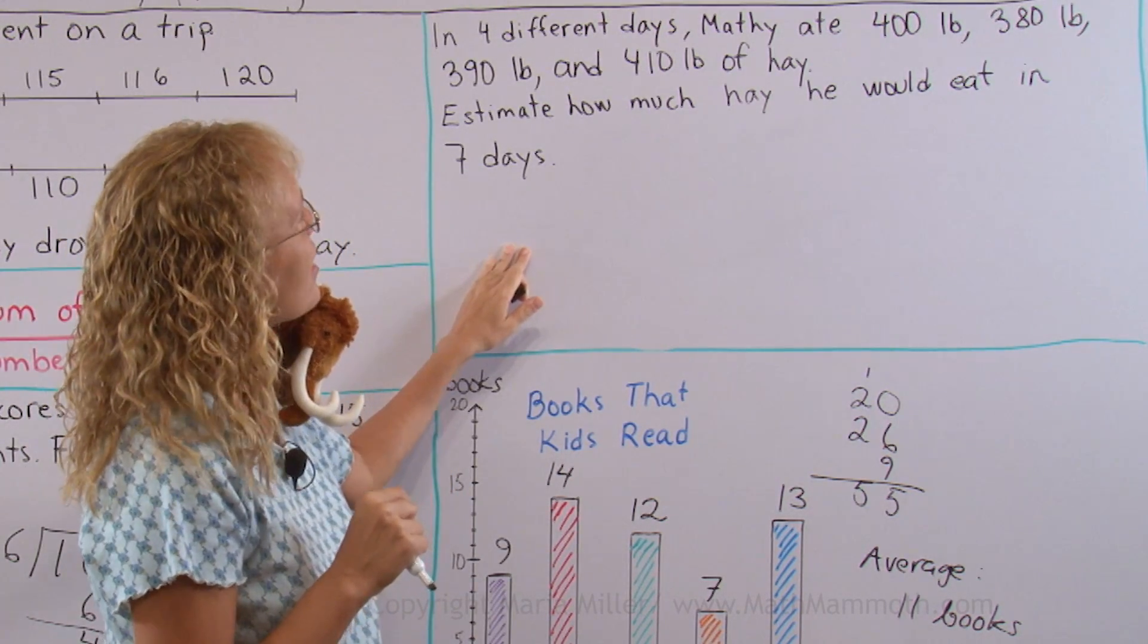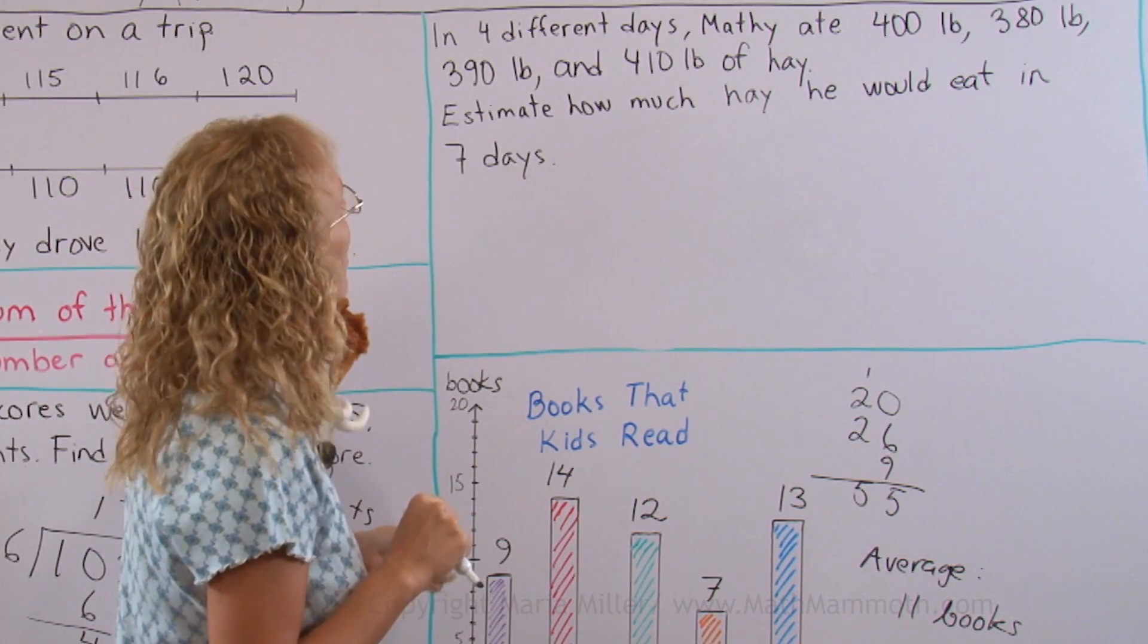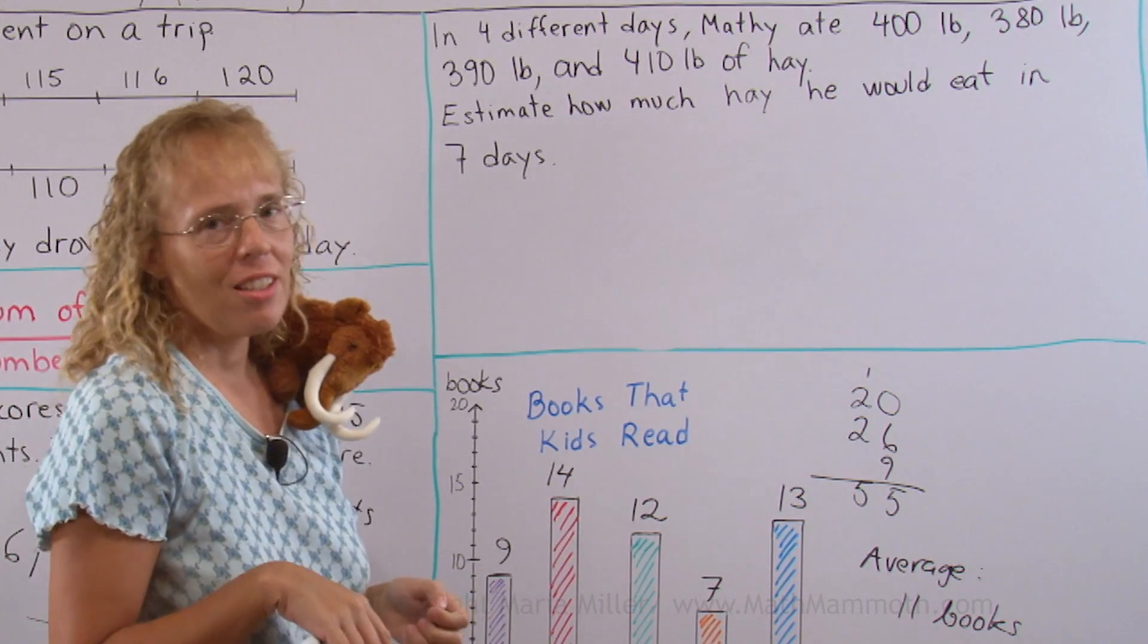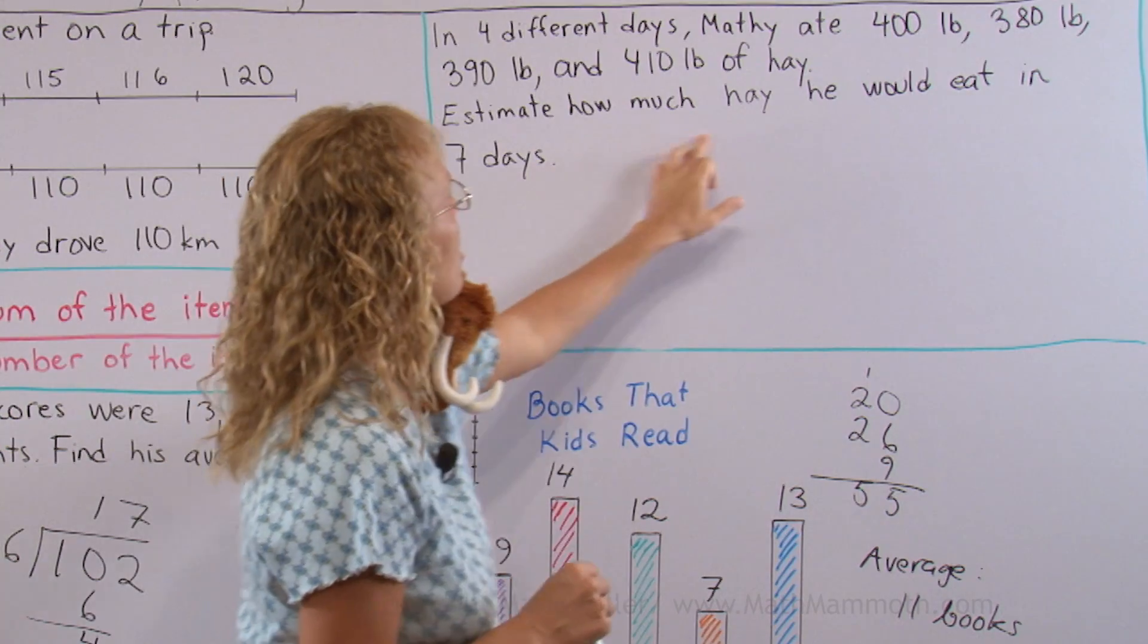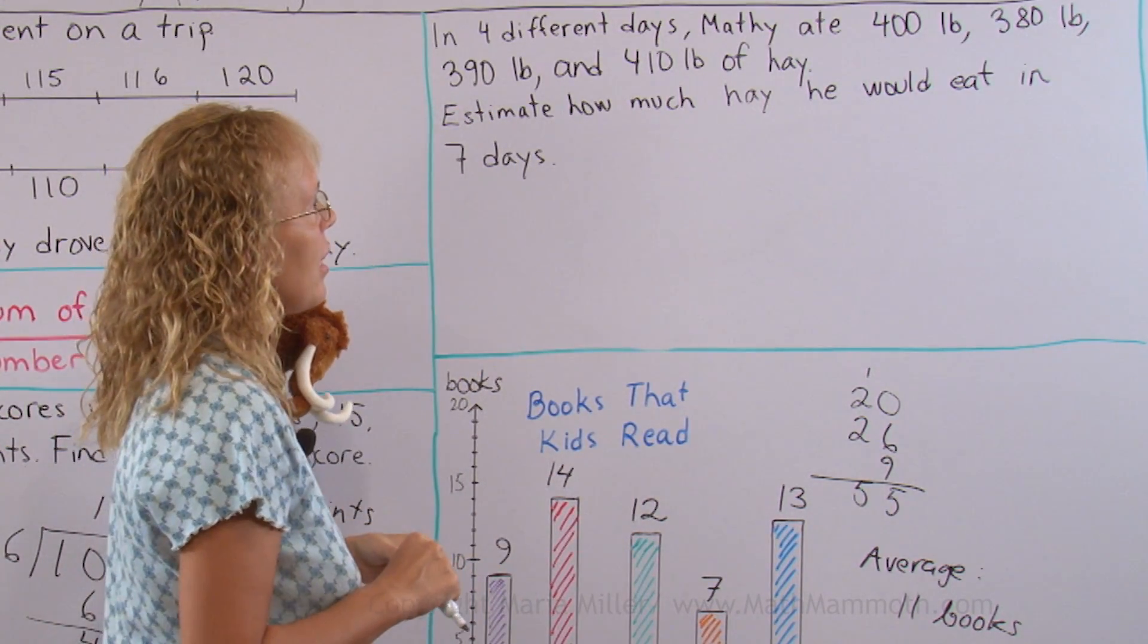Okay. In 4 different days Matthew ate 400 pounds, 380 pounds, 390 pounds and 410 pounds of hay. That's a lot of hay to eat but you know, mammoths are big animals. So estimate how much hay he would eat in 7 days.